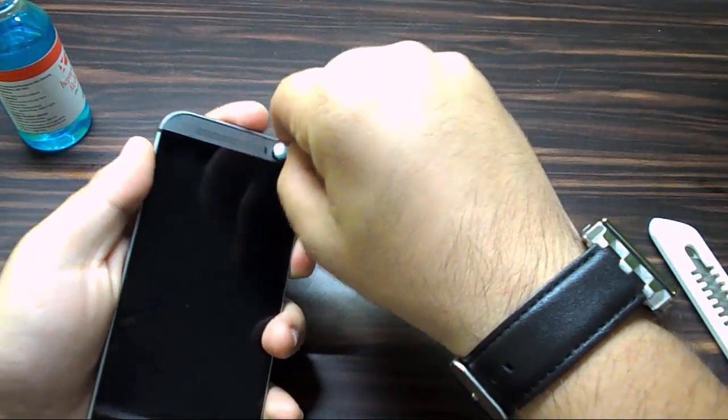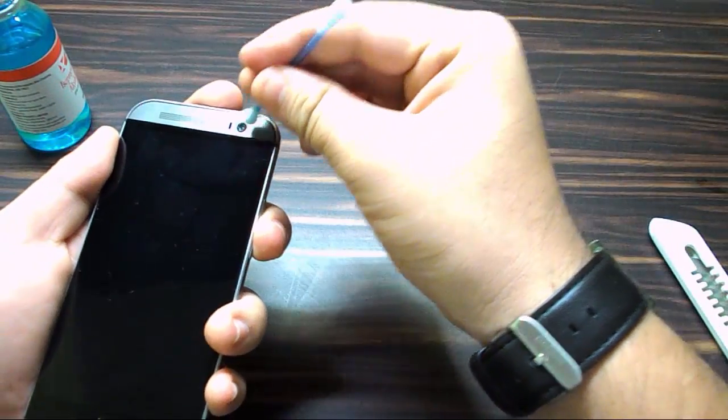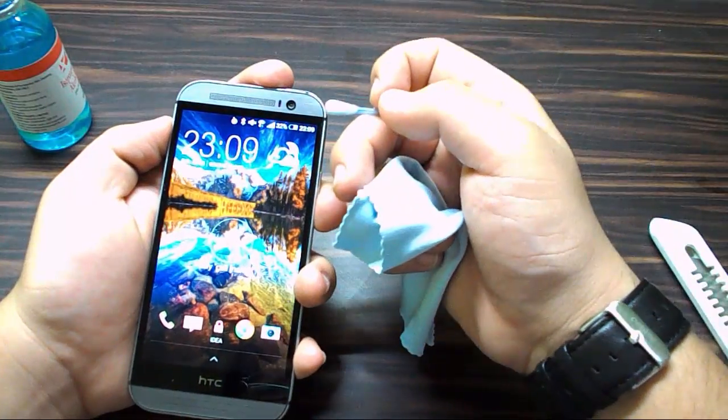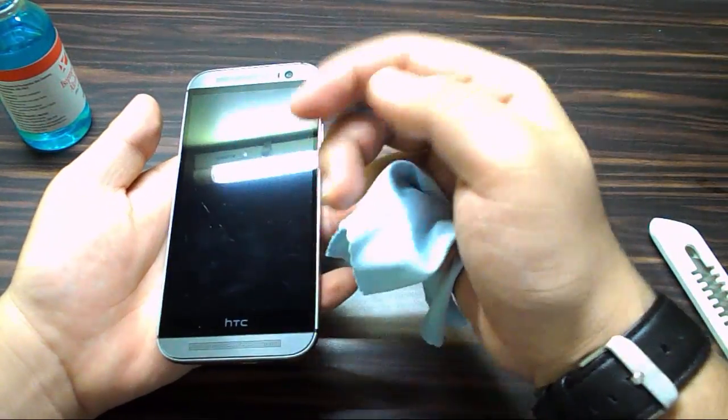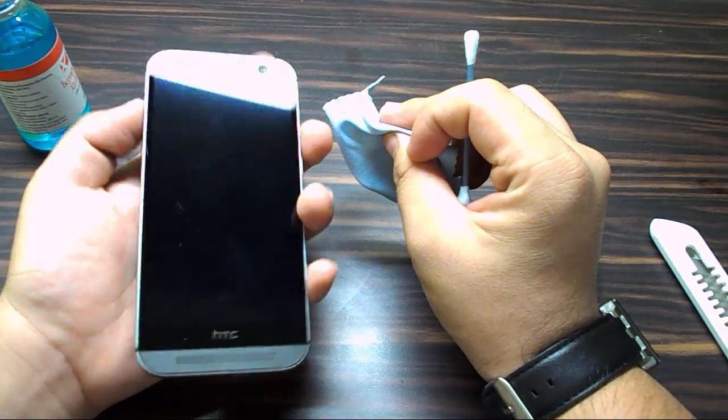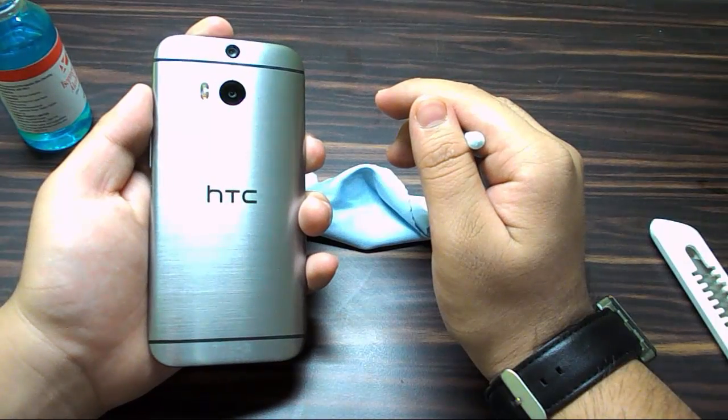So after multiple scrubs, after rubbing it multiple times, it is finally clean. So I'll just use it on the front-facing camera itself. Make sure you don't use it on the screen because that will eliminate the oleophobic coating on your phone. So let's see, it's totally clean now.